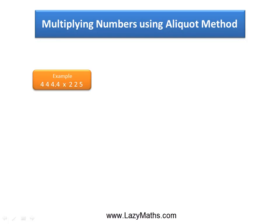Here's an example of multiplying numbers using the aliquot method: 444.4 times 225.